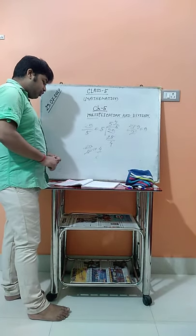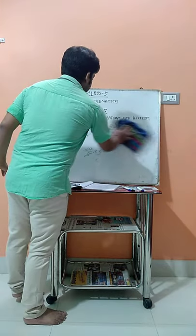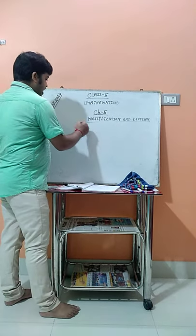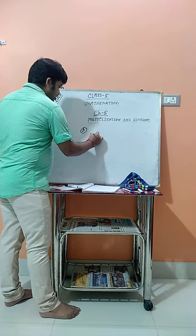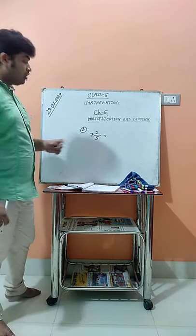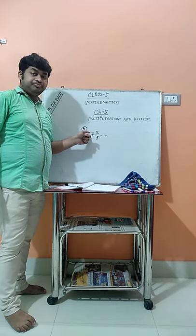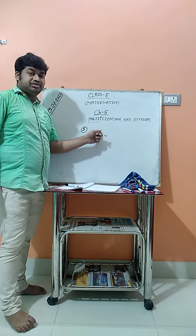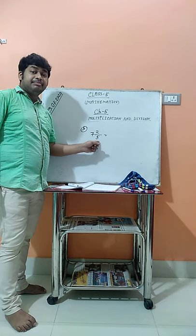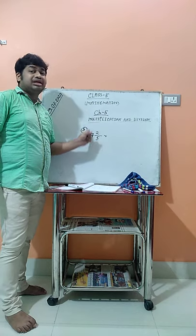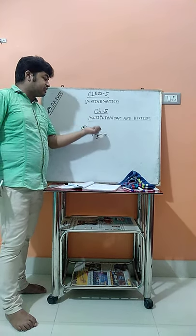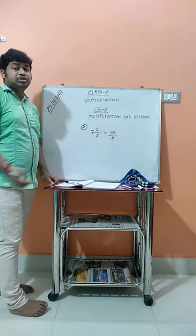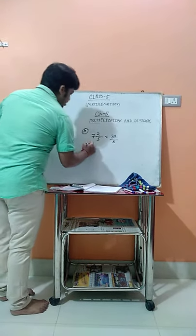Now number 5 says: write the following mixed numbers as improper fractions. The first is 7 and 2/5. To convert, multiply the whole number by the denominator: 7 times 5 is 35. Then add the numerator: 35 plus 2 is 37. So the answer is 37/5. This is how you convert a mixed fraction into an improper fraction.